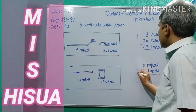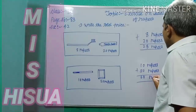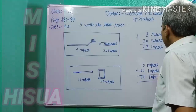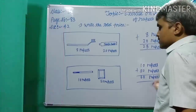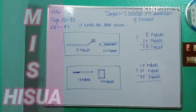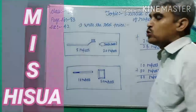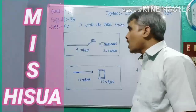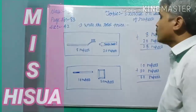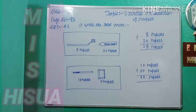Now add them: 0 plus 0 is 0, and 1 plus 5 is 6, so the total is 60 rupees for both articles. I hope you understand how to find out the total cost of the articles.